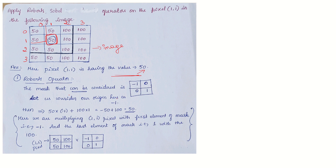First we apply Robert's operator. The mask we are considering for Robert's operator has elements: minus 1, 0, 0, 1. We consider the origin at minus 1. The procedure is: multiply the (1,1) pixel with the first element of the mask, that is minus 1, and multiply the corresponding element with the last element of the mask, that is 1.